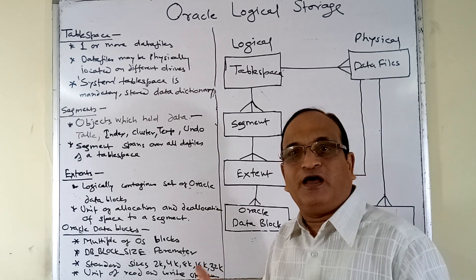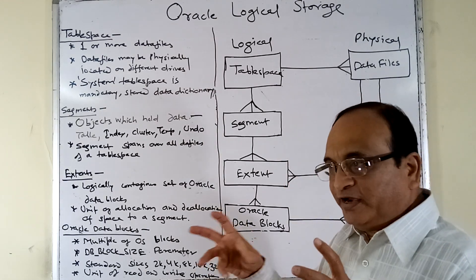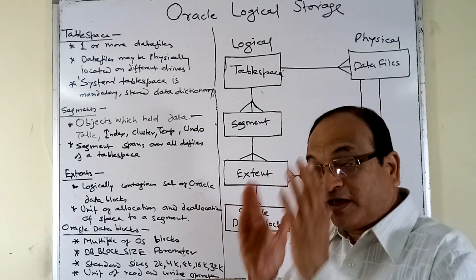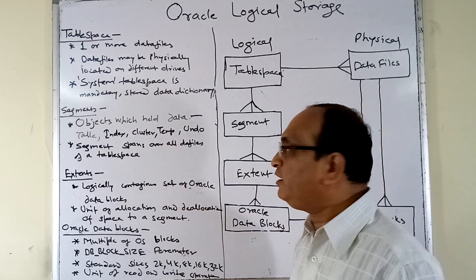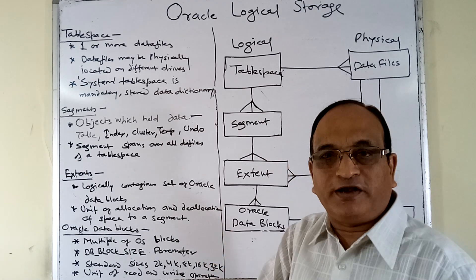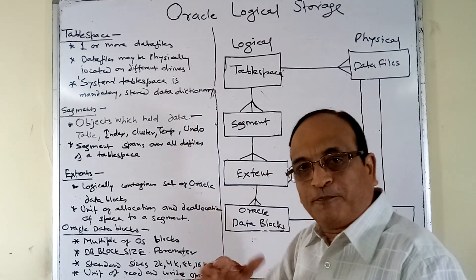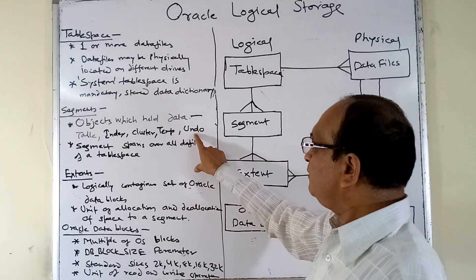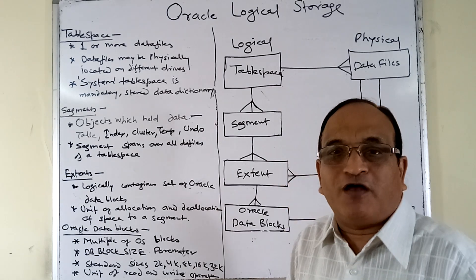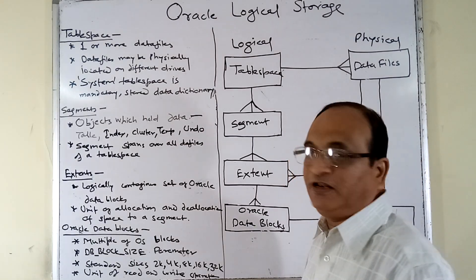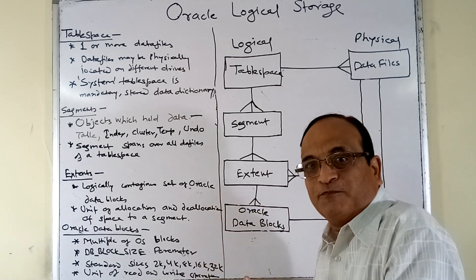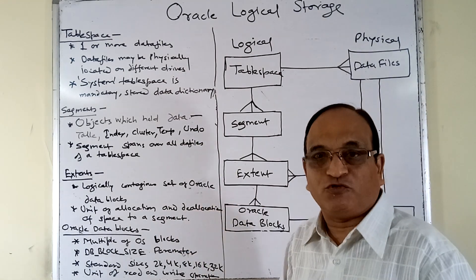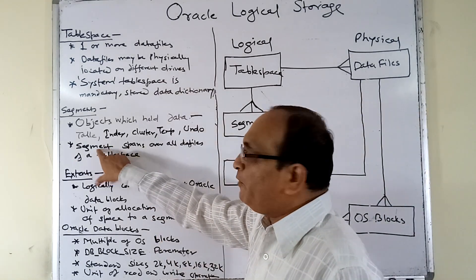Cluster tables are tables stored in pre-joined form, so if certain tables are mostly accessed together in a join, the data is stored in the same block, avoiding fetches from two different locations. Temporary segments are used for intermediate results of sort operations; once the sort is complete, the temporary segments are released. Undo segments, also called rollback segments, help roll back data and provide read consistency — when a user changes data, another user performing a SELECT will see the original version from the undo segment.